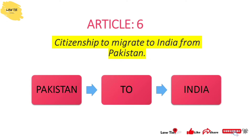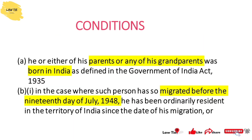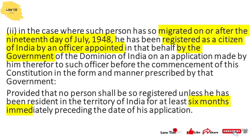Next is Article 6: citizenship for persons who migrated to India from Pakistan. Under Article 6(a), if the person, or their parent or grandparent, was born in India according to the Government of India Act 1935, they qualify. Under Article 6(b), if migration was before 19 July 1948 and the person has been registered as a citizen by an appointed government officer, having resided in India for six months immediately prior, they will get Indian citizenship.